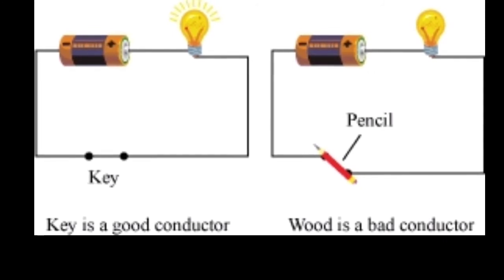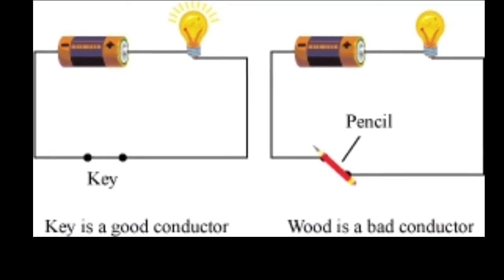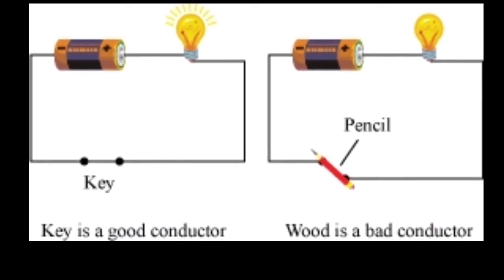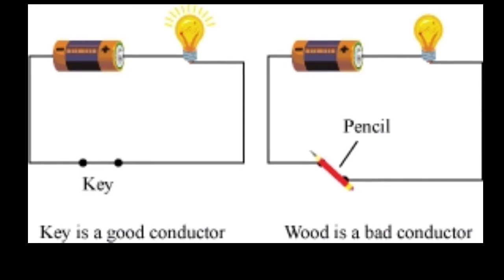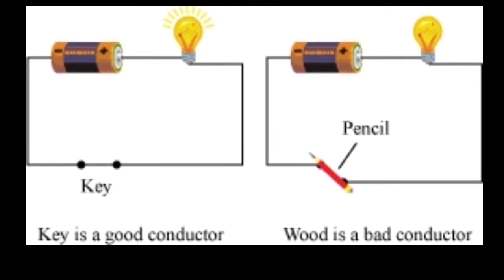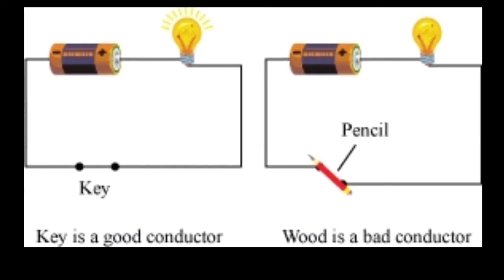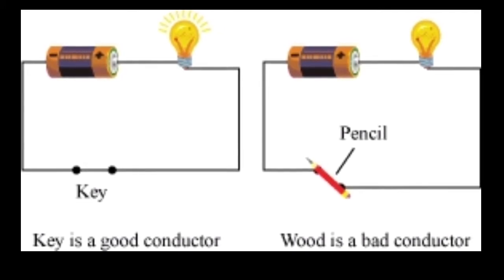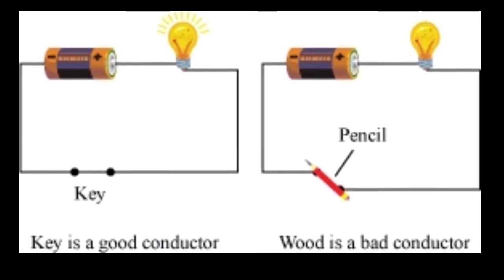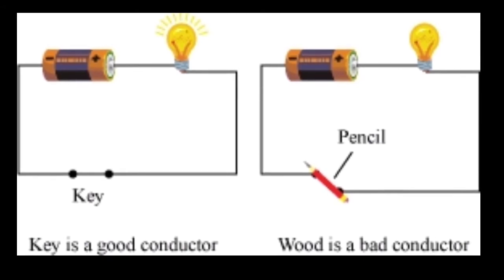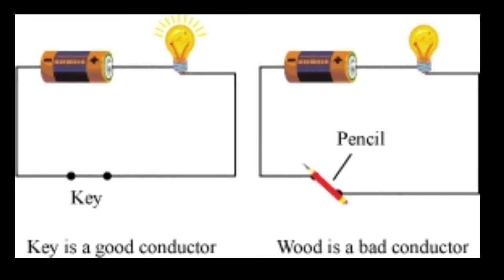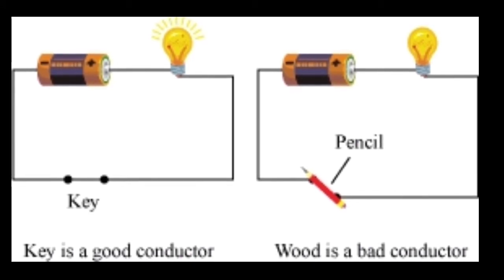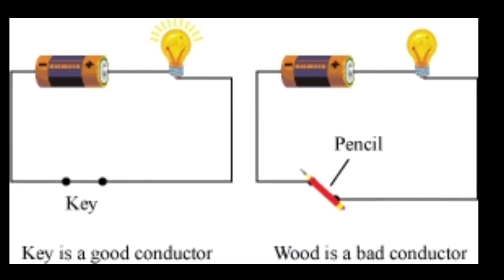Metals are good conductors of electricity, meaning electricity can easily pass through metal. Non-metals are bad conductors of electricity, meaning we cannot pass electricity through non-metals. In the first figure, the bulb is glowing because the key is a metal. In the second picture, the bulb is not glowing because wood is a non-metal. So metals have good flow of electricity, while non-metals have very poor flow of electricity.